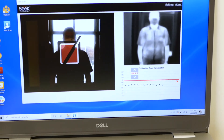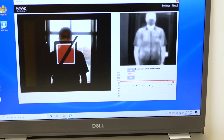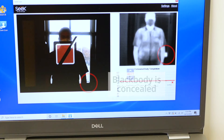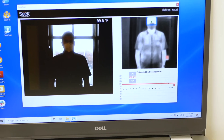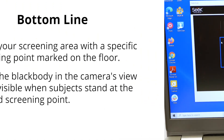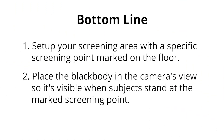Here, the blackbody is placed so that it's almost fully concealed by the test subject. If SeekScan can't see the heat source, it won't be able to take any measurements. Bottom line, set up your screening area with a specific point for subjects to stand on. Place the blackbody in the camera's view so it's visible when subjects stand at the screening point.